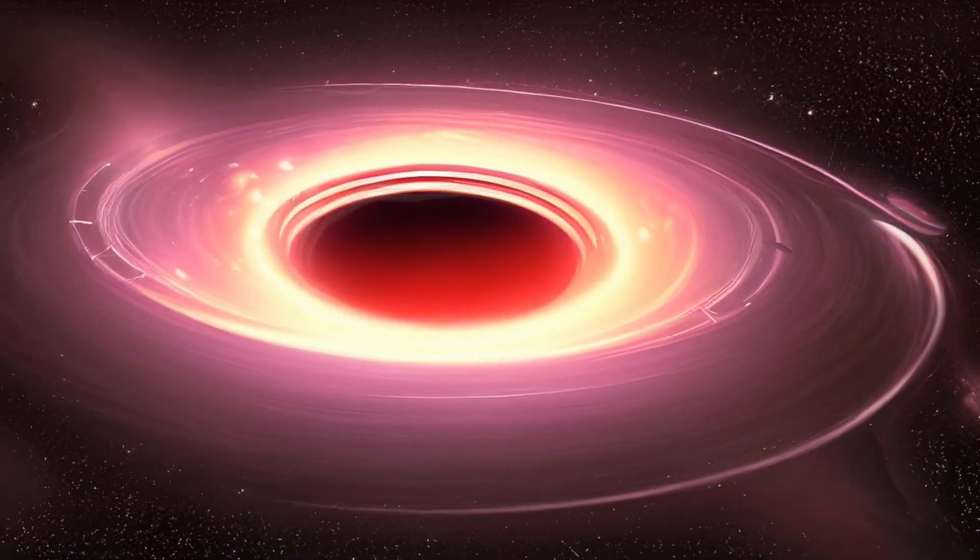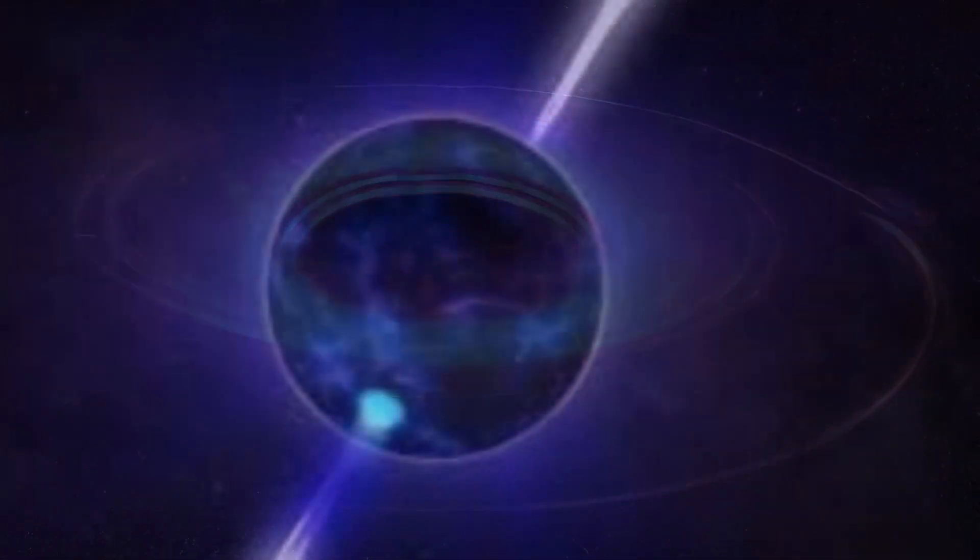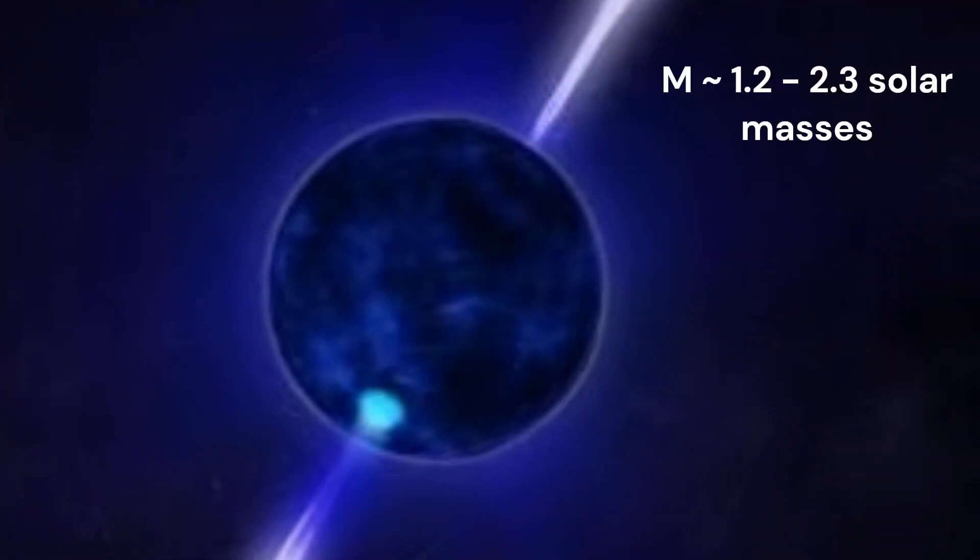Up until recently, all known neutron stars had masses that were consistent with theoretical predictions, falling between 1.2 and 2.3 solar masses.